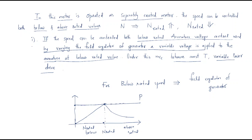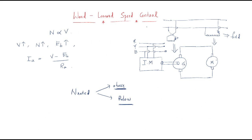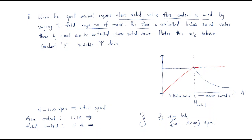To control the speed below rated value, we are using the armature voltage control method. For the second case — when speed control is required above the rated value — the flux control is used. By varying the field regulator of the motor, the flux is controlled. Just look at the diagram: this is the field regulator, and by varying this field regulator, the flux is controlled.